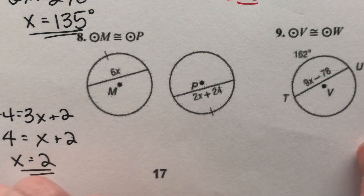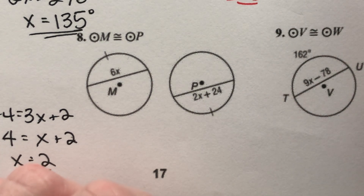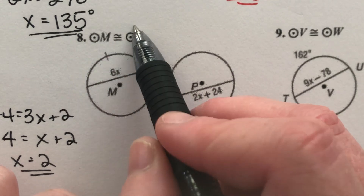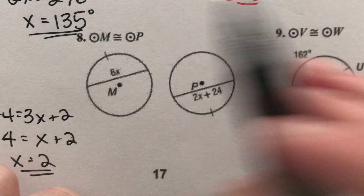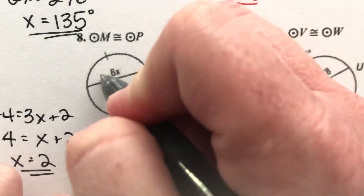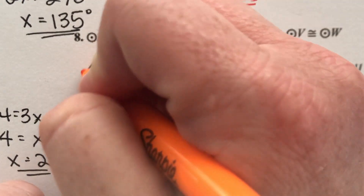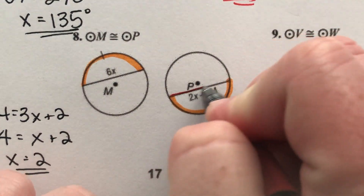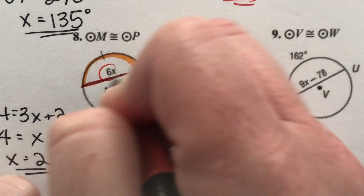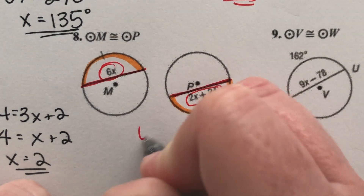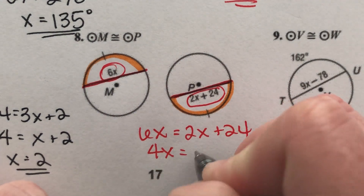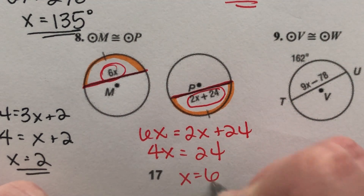Number 8: two circles. The rule still applies — if the chords are the same length, the arc measures are the same. It tells us circle M and circle P are congruent, so they're the exact same size. The arc in circle M is congruent to the arc in circle P. Since those arcs are congruent, the chords are congruent: 6X equals 2X plus 24. Subtract 2X: 4X equals 24. Divide by 4: X equals 6.